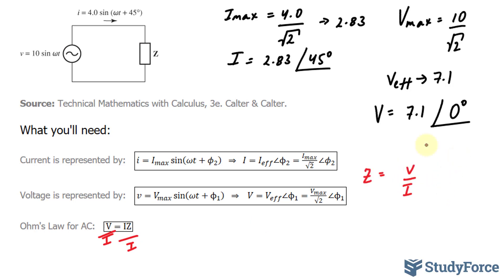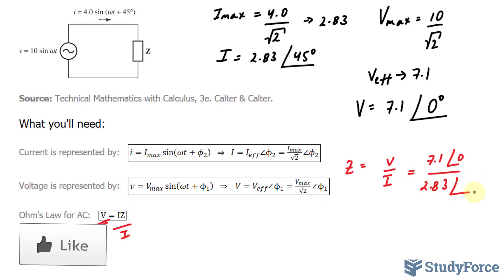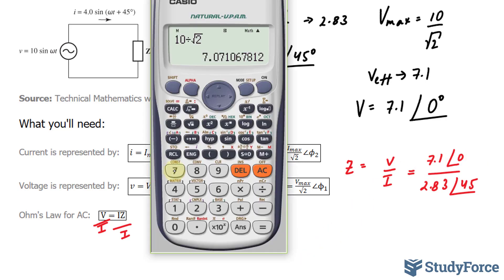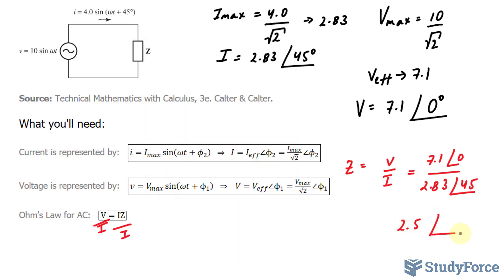Let's substitute what we just found earlier: 7.1 ∠0° over 2.83 ∠45°. We are dividing two complex polar form numbers. To do that, we divide the radii: 7.1 divided by 2.83 gives me 2.50 at an angle of 0 minus 45, which equals negative 45 degrees. So Z = 2.50 ∠-45°. That represents the impedance in polar form for the circuit.